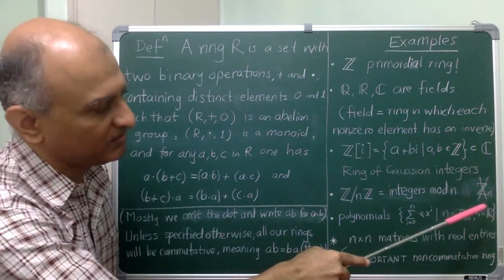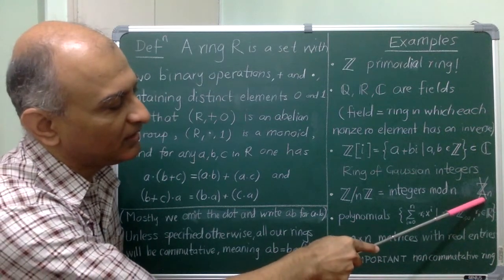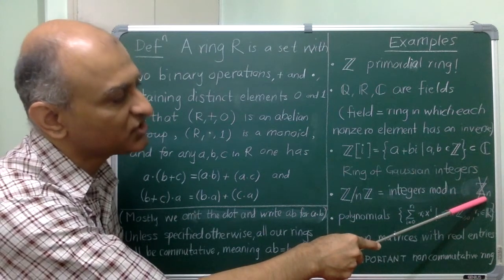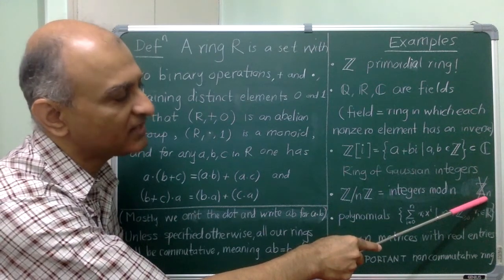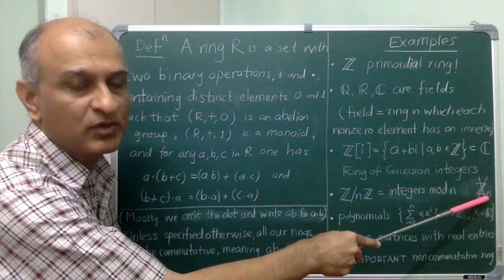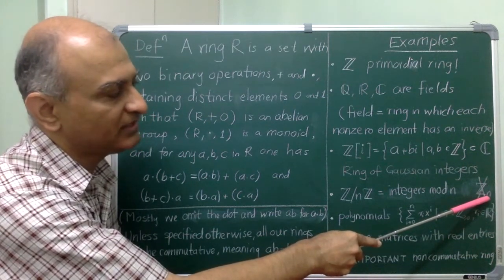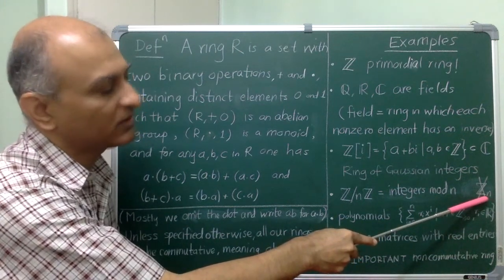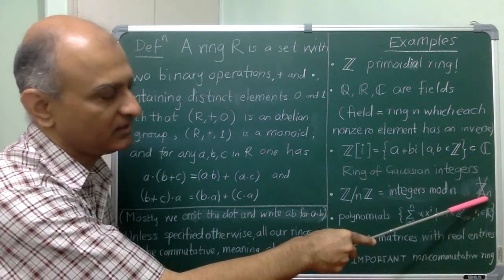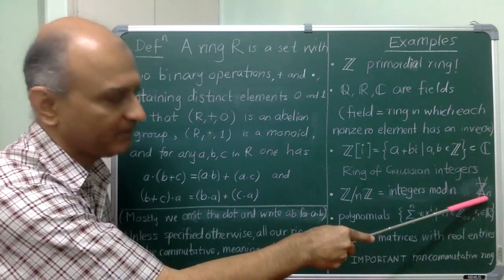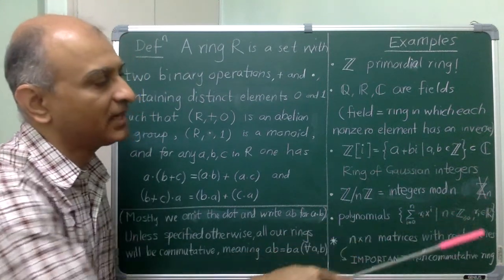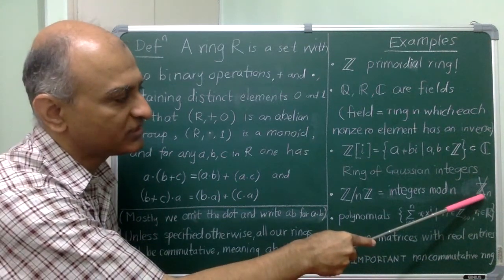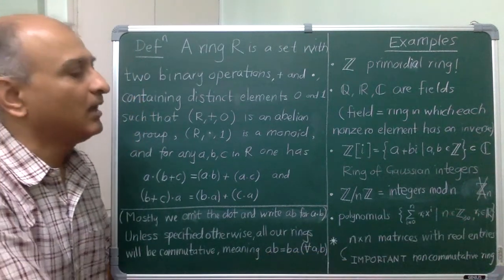All right, just a little note here. You may have seen the ring of, you may have seen integers modulo n represented using this notation Z and subscript n. Please do not use this notation because in ring theory this notation, especially when n is a prime number, is used for denoting a completely different ring, an important ring of p-adic integers. Perhaps we will have a chance to see this sometime but please do not use this notation to denote Z mod nZ.